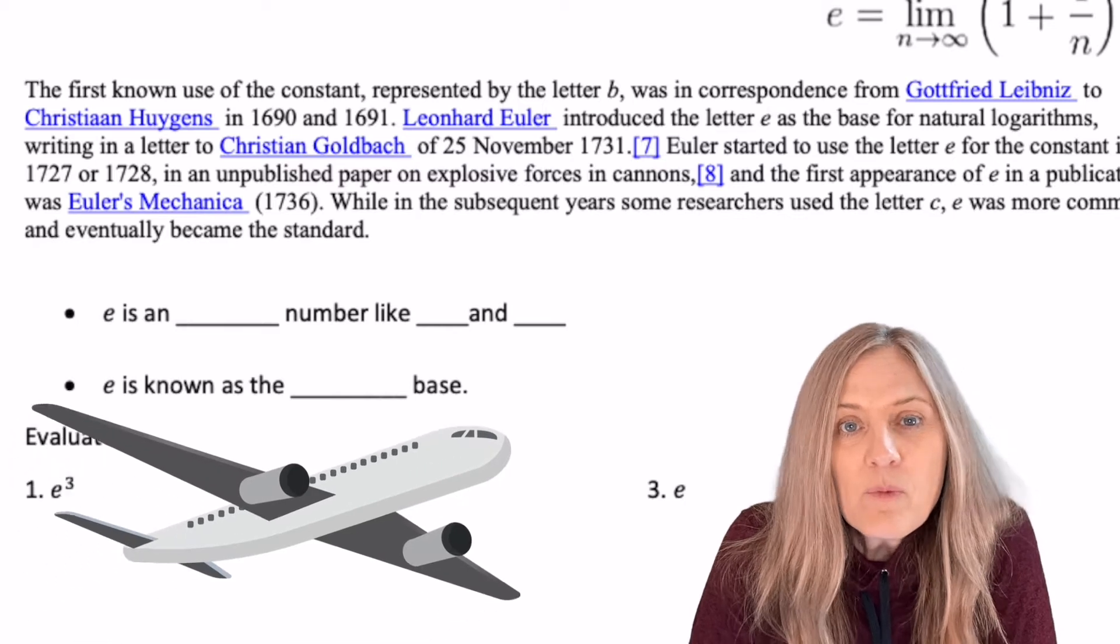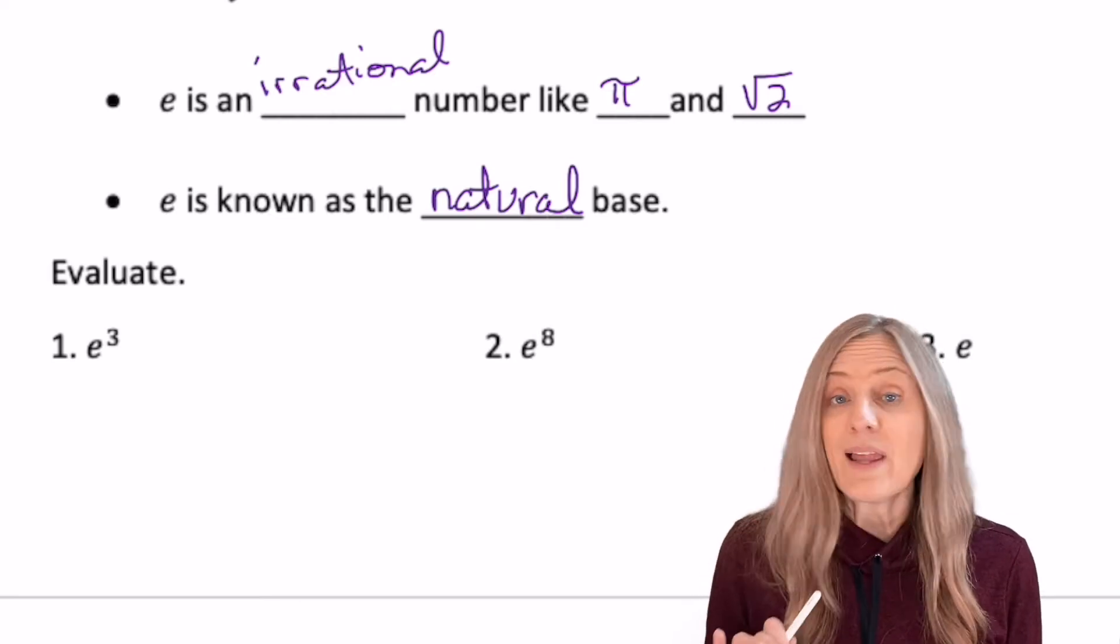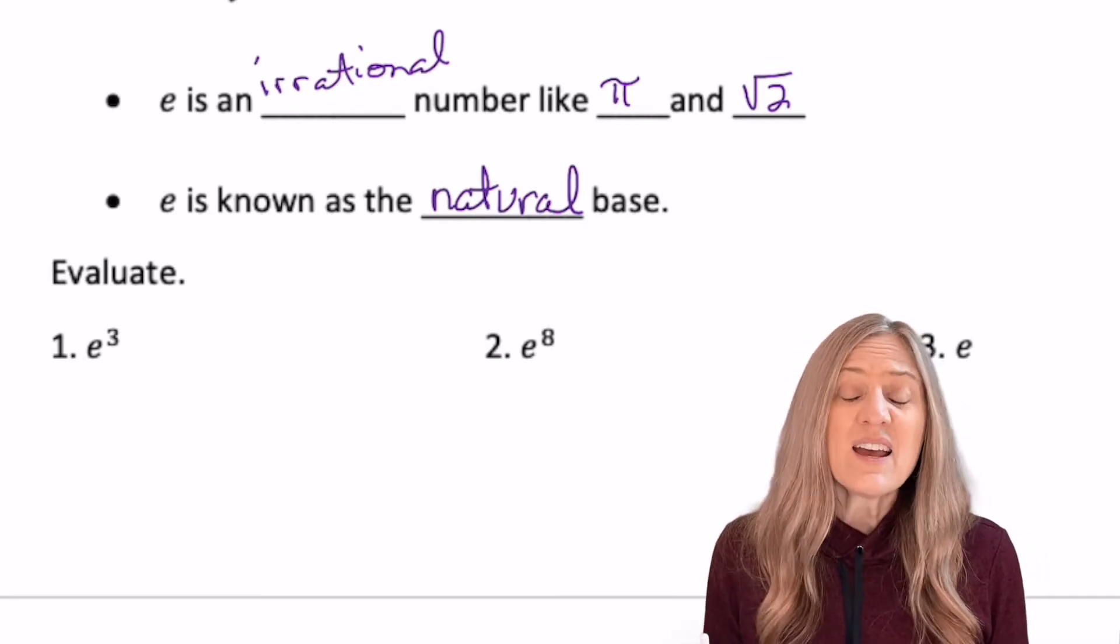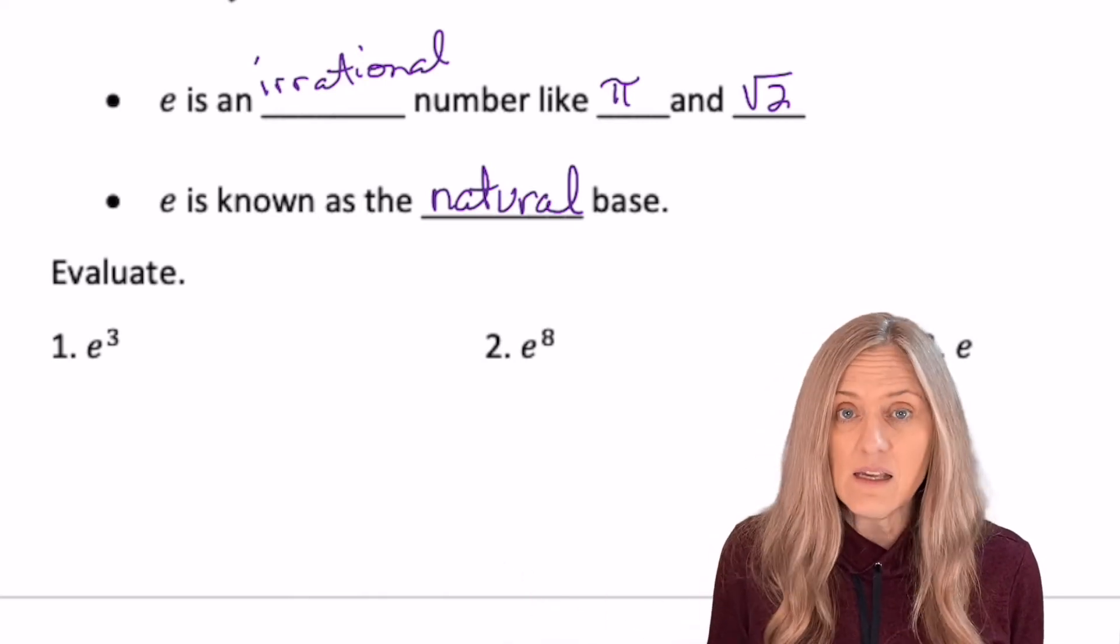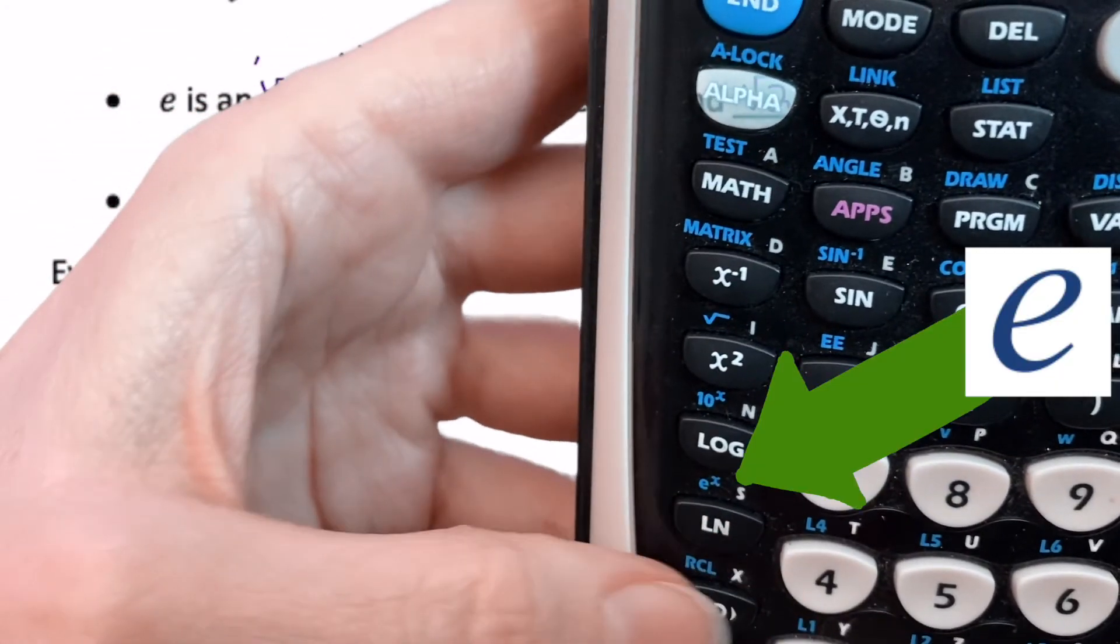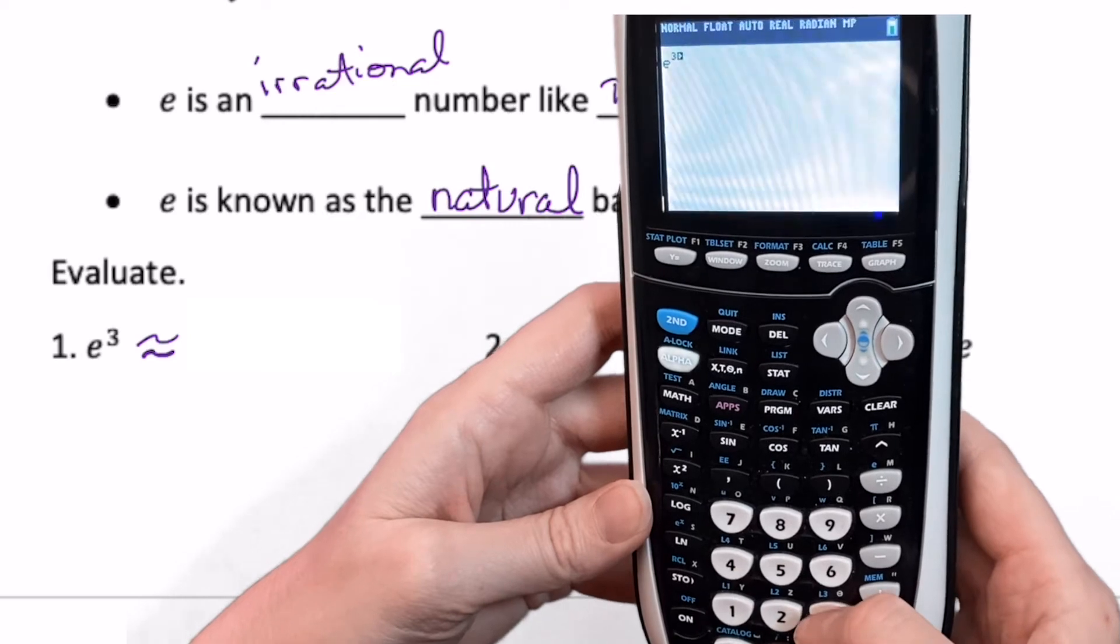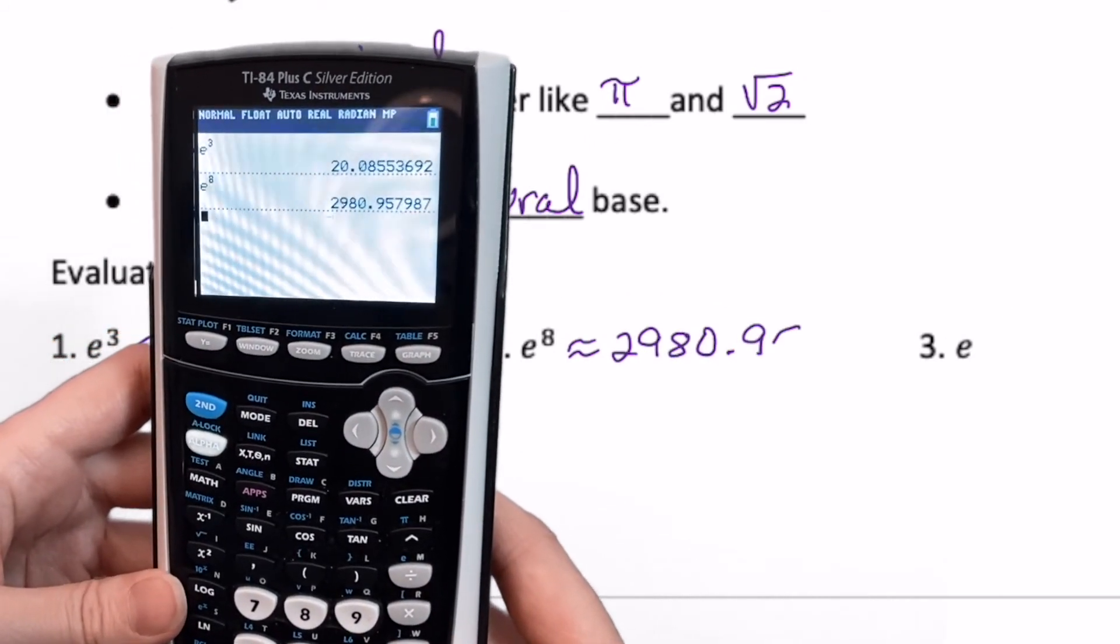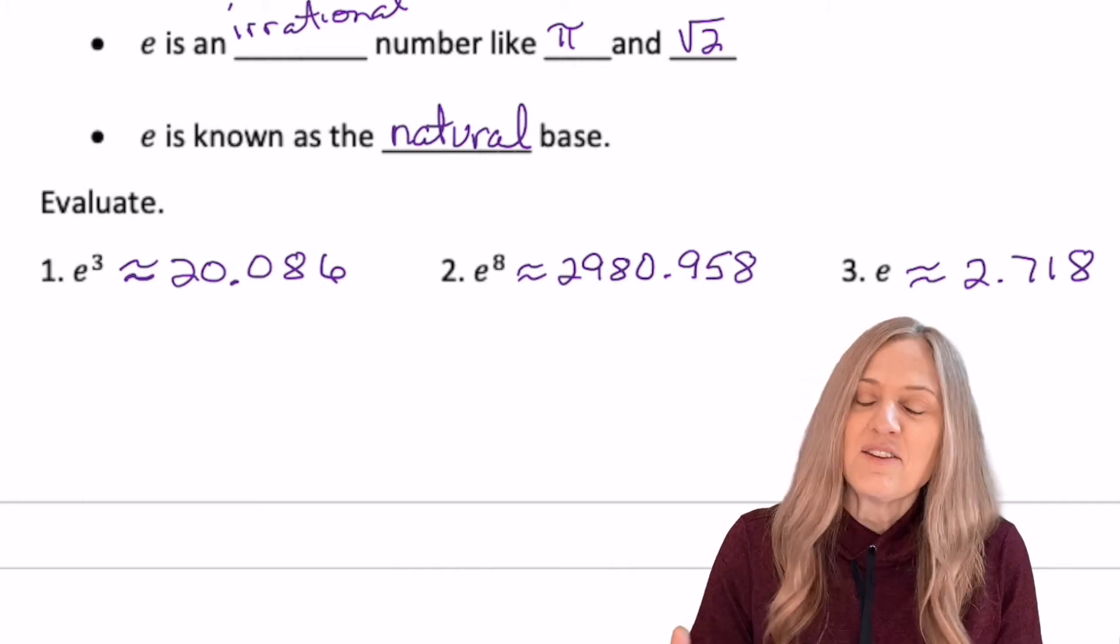If you want to find something really cool, research the Bernoulli principle. We use it for flight. Okay, let's make sure we have this straight. E is an irrational number like pi or square root of 2. And E is also known as the natural base. So now when we see E, we have to be careful. Are we using it as a variable or are we using it as the number 2.718 and so on? Let's evaluate using E. So the first one is E cubed. Obviously, we're going to pull out our calculators. So E cubed is approximately 20.086. And then, of course, we figured out the others.